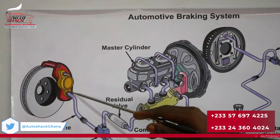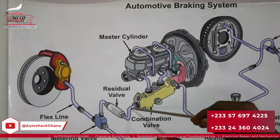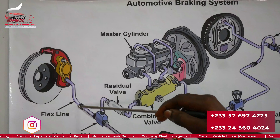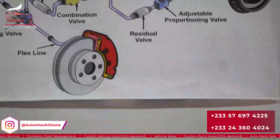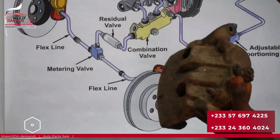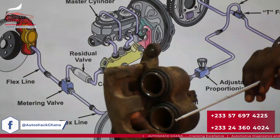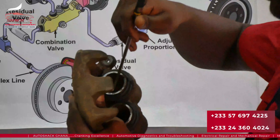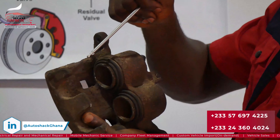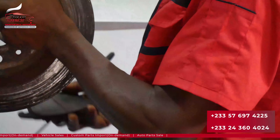At the front we have a flex line. From the metering valve, it's hard brake pipes most of the way, but closer to the wheel we incorporate the flex line. Fluid from the metering valve goes through the flex line into the calipers. This is a floating-type caliper with two pistons inside. The brake fluid enters through the flex line into the brake cylinders, pushes the pistons out, and the pistons press the brake pad against the brake disc.